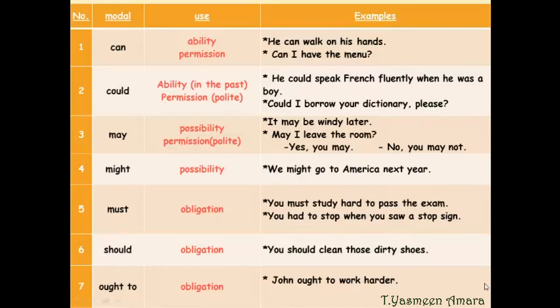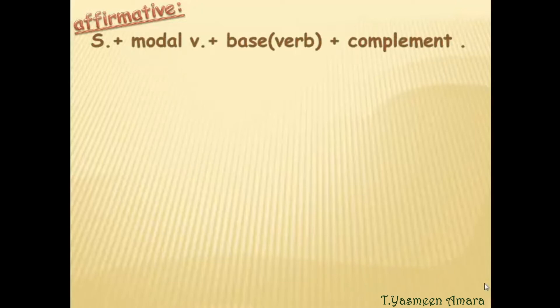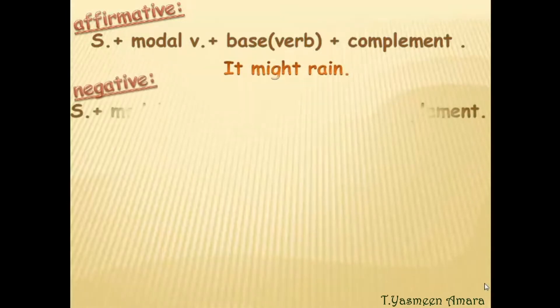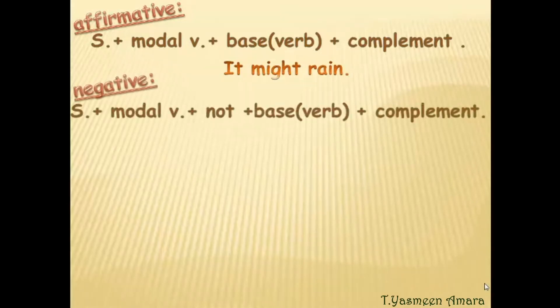Now we will talk about the forms of modal verbs. The affirmative form: subject + modal verb + base form of the verb + complement. Example: 'It might rain.' The negative form: subject + modal verb + not + base form of the verb + complement. Example: 'She couldn't swim.'